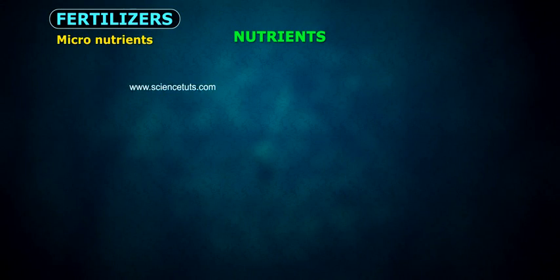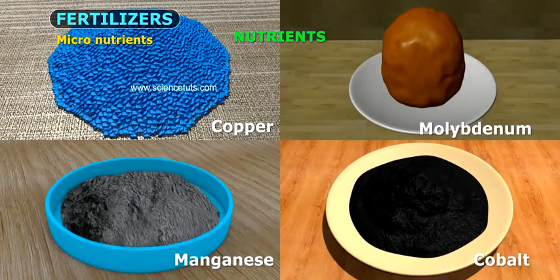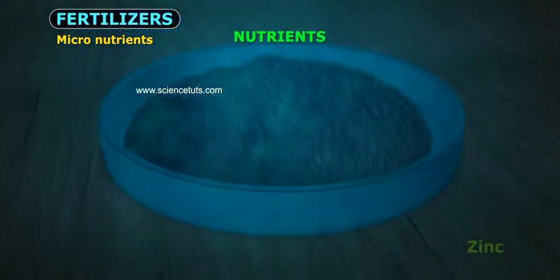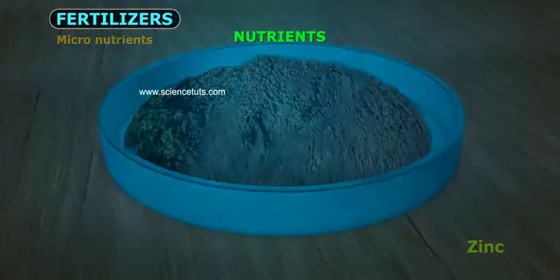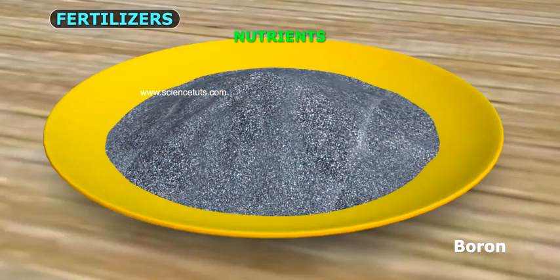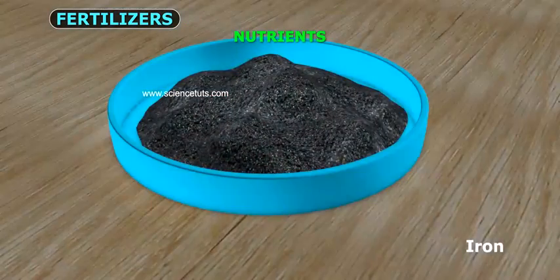Micronutrients examples are copper, molybdenum, manganese, cobalt, zinc, boron, and iron.